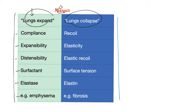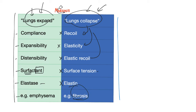On the other side, lung collapse equals recoil, which is opposite to compliance. Elasticity equals recoil, which is opposite to expansibility. Surface tension is opposite to surfactant. In pulmonary fibrosis, your lungs tend to collapse — increased recoil, increased elasticity, increased elastic recoil, increased surface tension, increased elastase. In emphysema, it's the opposite: your lungs tend to expand — greater compliance, greater expansibility, greater distensibility, and greater elastase has destroyed the elastin fibers.